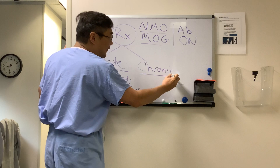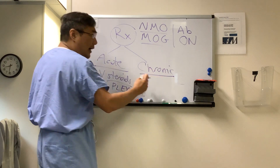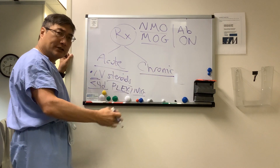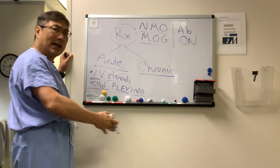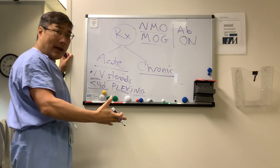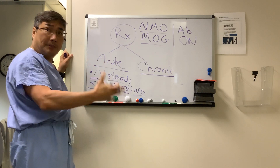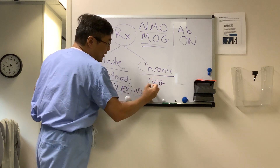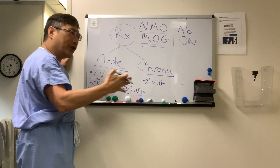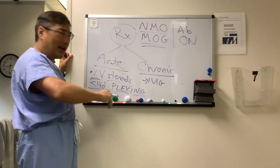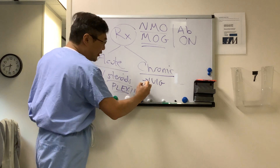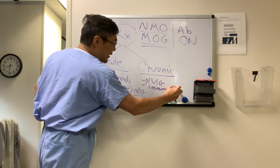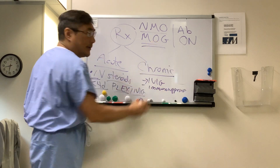In the chronic phase for MOG, you have the traditional treatments — immunosuppression agents: mycophenolate, azathioprine, rituximab using a B-cell depleting strategy — or IVIG. Whether you're worried about recurrence and side effect profiles will determine whether you go to immunosuppressive therapy versus IVIG in MOG.